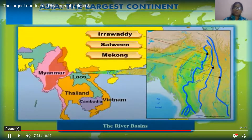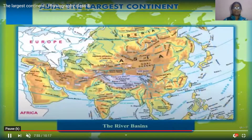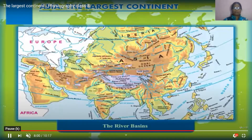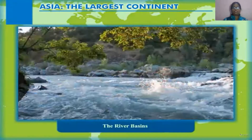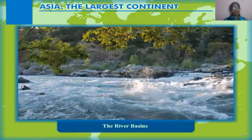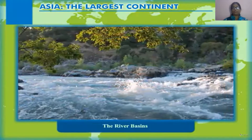The fourth physical feature is the river basin. In this image you are also able to see the Tibetan plateau shown in a light color. A river basin is a portion of land drained by a river and its tributaries.